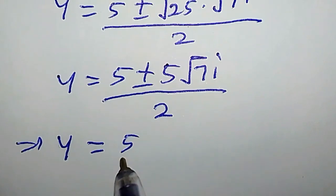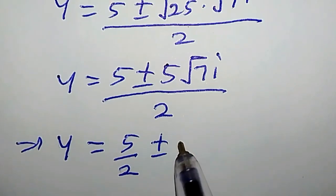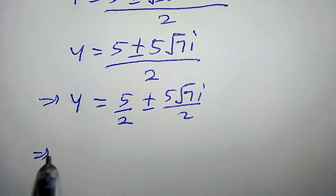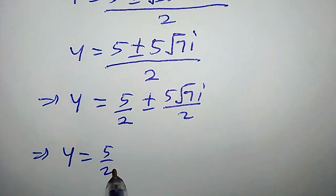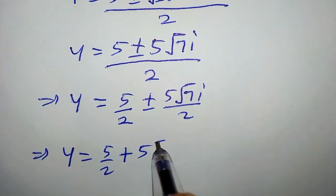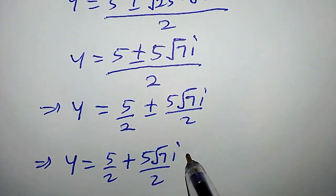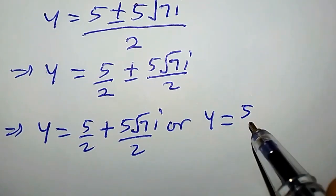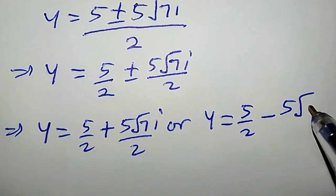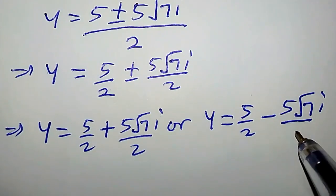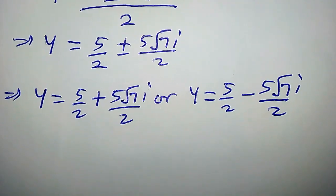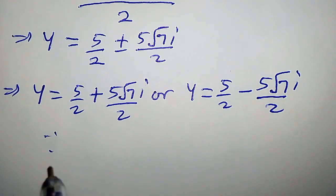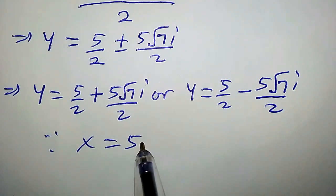This implies that y equals 5 over 2 plus or minus 5 root 7i over 2. So the two values for y are: y equals 5 over 2 plus 5 root 7i over 2, or y equals 5 over 2 minus 5 root 7i over 2. We can then use these two values to obtain the value of x, since x equals 5 minus y.